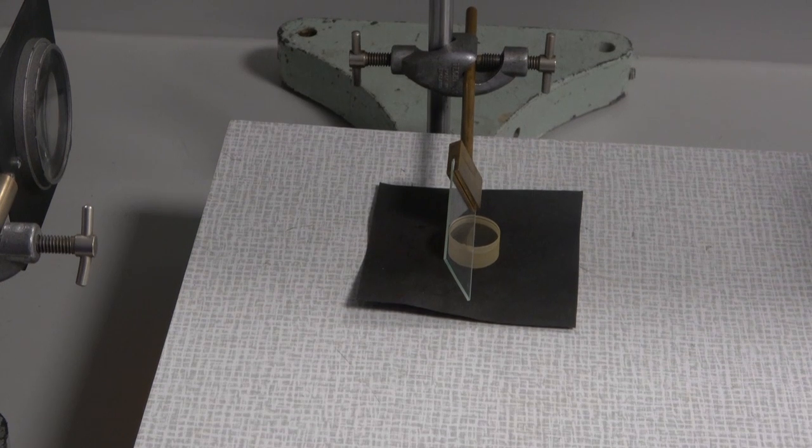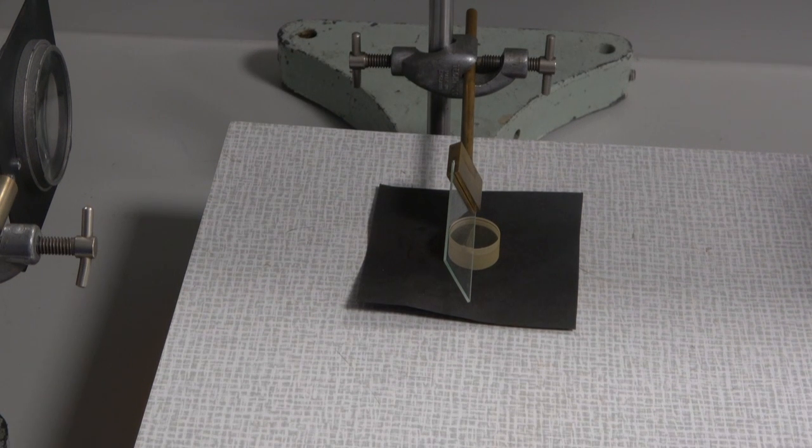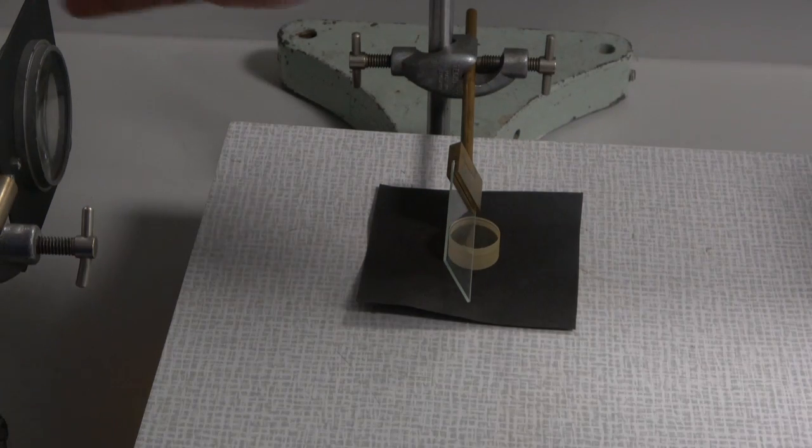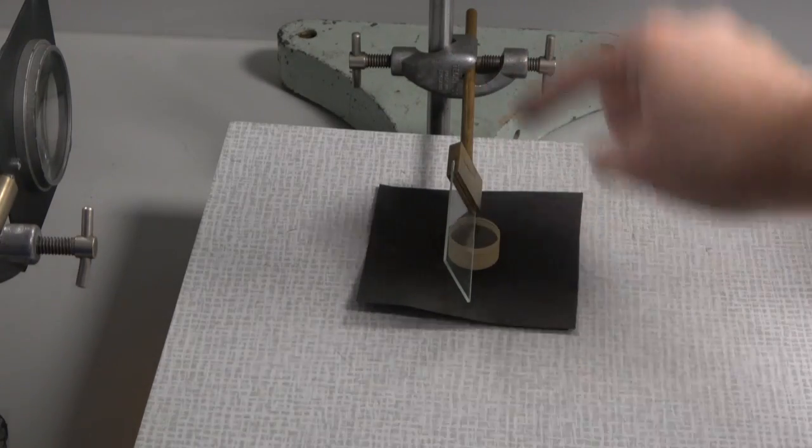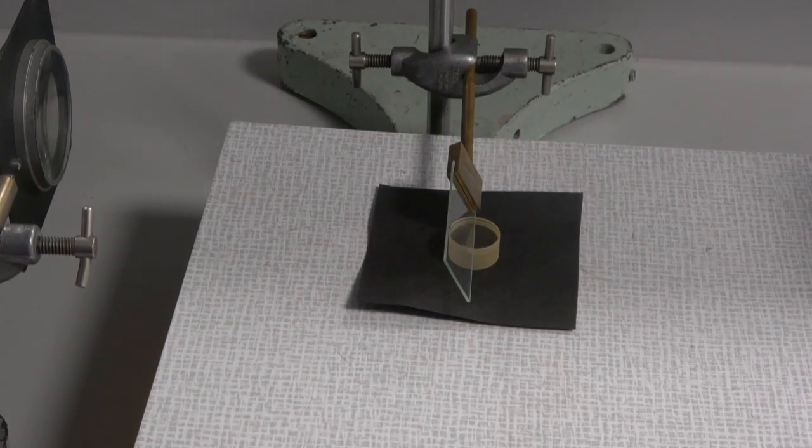So, there's a couple problems with our experimental setup at the moment. The first is that it's not aligned very well. So, I need to make sure that the light's going to travel through, strike this, reflect down onto my optical flat, and reflect back up.